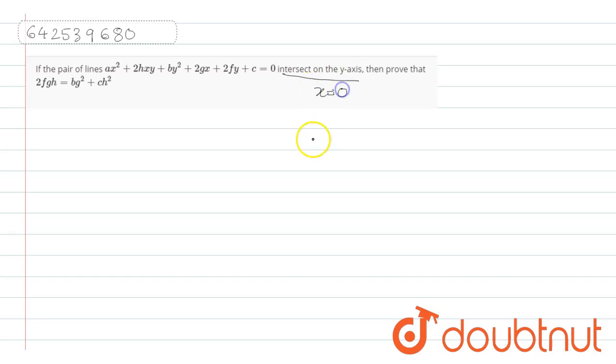We can write that x equals 0. Then you have to prove that 2FGH equals BG square plus CH square. We know that this pair of straight lines is a pair of straight lines only under a condition: ABC plus 2FGH minus AF square minus BG square minus CH square equals 0. This is the condition for pair of straight lines.